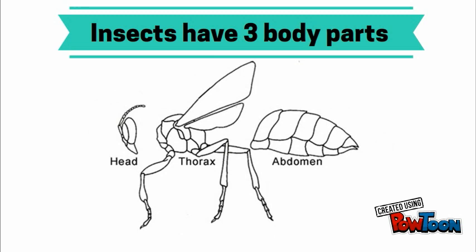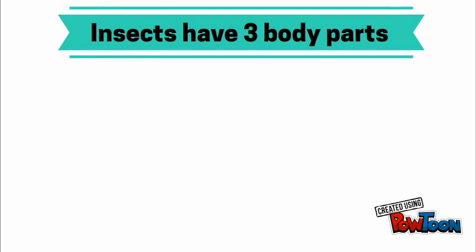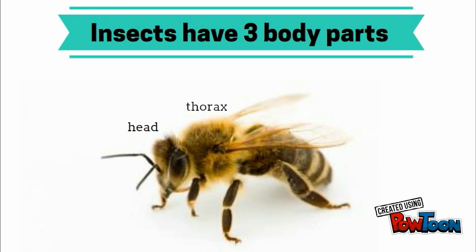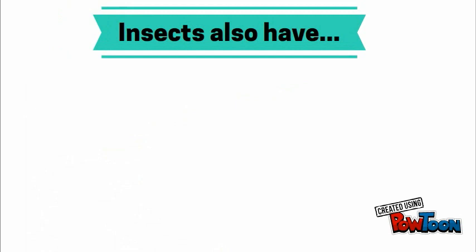First, it's important to note that all insects have three body parts. They have a head, a thorax, and an abdomen. Now let's look at a real insect. On this bee, we can see its head, thorax, and abdomen.